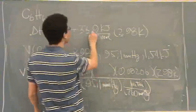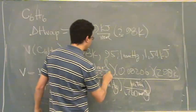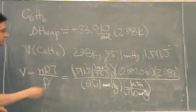So flip this number over there. 1 mole for every 33.9 kilojoules. So you can see the kilojoules cancel.